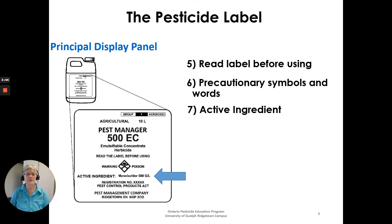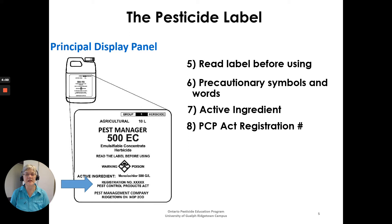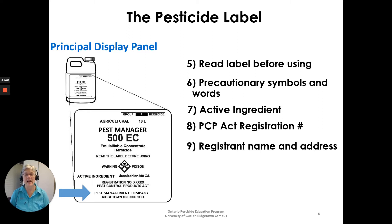The active ingredient will be on the front panel so you know the actual pesticide active ingredient and its concentration — in this case it's metolachlor at 500 grams per liter. The PCP Act registration number is unique to each product, issued by Health Canada's Pest Management Regulatory Agency; it's useful for first aid or hospital reference. The registrant name, address, and phone number are also listed so you can contact them if you need help.